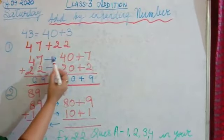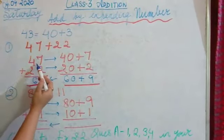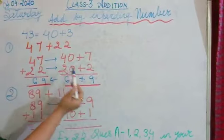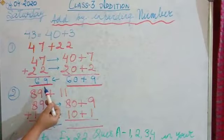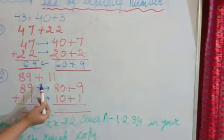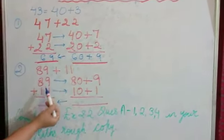So you can see children here my arrow is going this side because from 47 I move here, 22 I move here. But from here 60 plus 9 should give me 69. Now let's take example 89 plus 11.